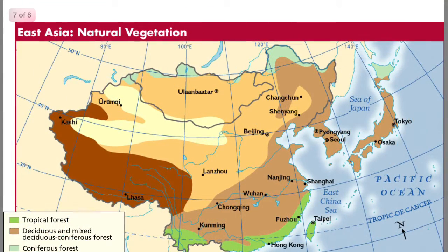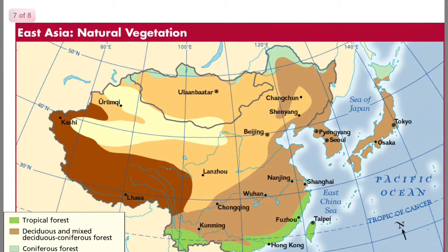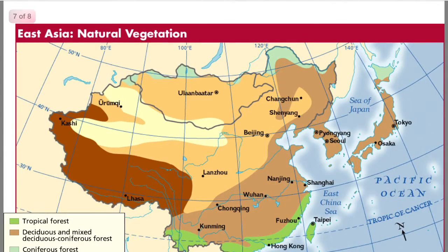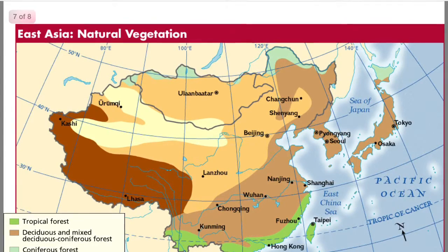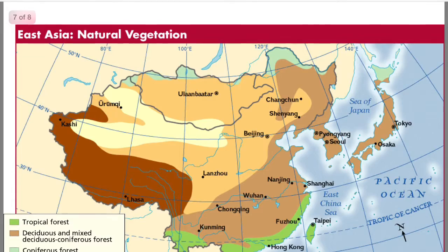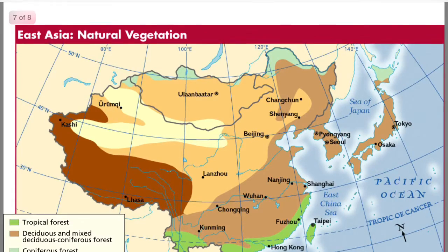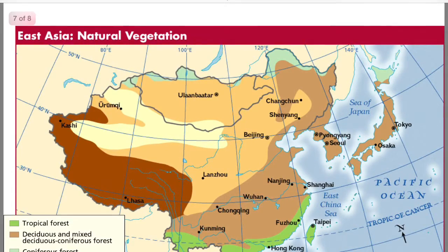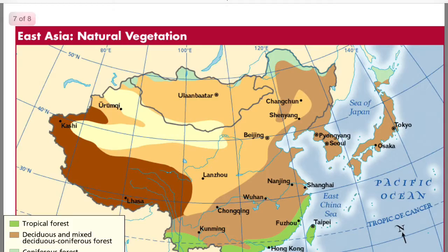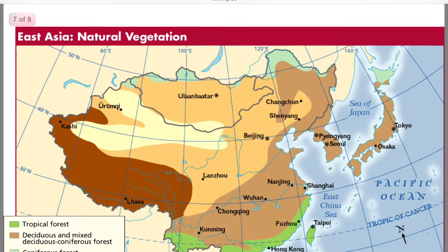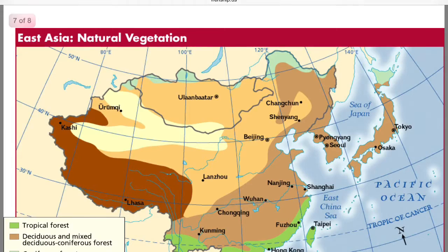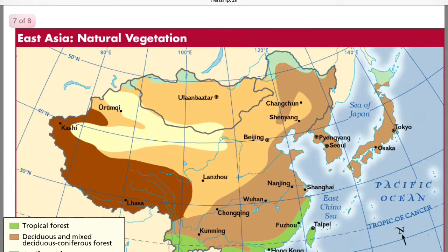Temperate grassland is the vegetation zone that mostly covers Mongolia. This area is usually very fertile and contains a rich mix of grass. Another vegetation located in Mongolia is coniferous forest, which causes the area to become temperate, making summers warm and winters cool.